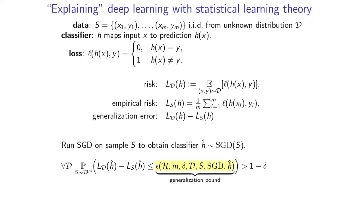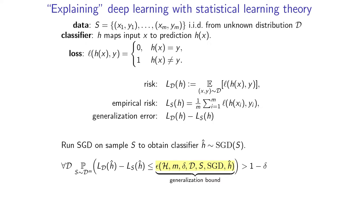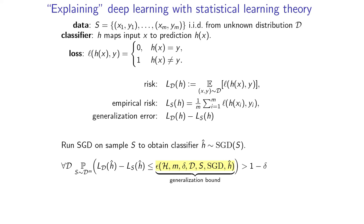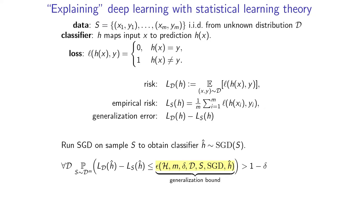We'll approach explaining deep learning from statistical learning theory. We have some training data S, which is IID pairs of data sampled from some unknown data distribution D. Each pair is (X_i, Y_i) — the input and the output. For example, X_i are input images and Y_i are the labels. A classifier H maps an input X to a prediction H(X). We'll consider a 0-1 loss, which returns 0 if we are correct and 1 if we are incorrect. We care about the true risk — the expected loss under the data distribution — the empirical risk, which is the average loss over our training data, and the generalization error, which is the gap between the two risks: L_D minus L_S.